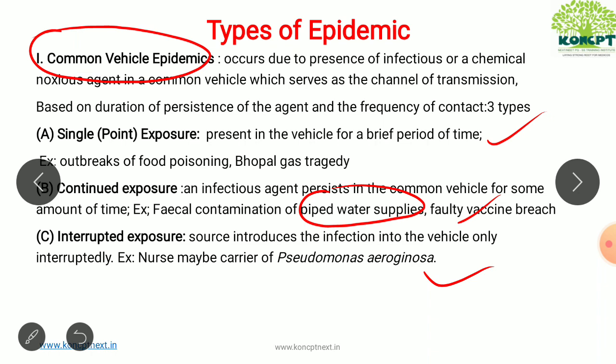Interrupted exposure is where the vehicle introduces the infectious agent at intermittent intervals. For example, a nurse working in one of the day shifts is infecting people with Pseudomonas aeruginosa during that period of time.